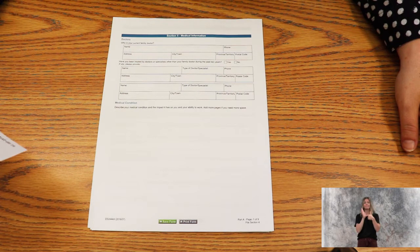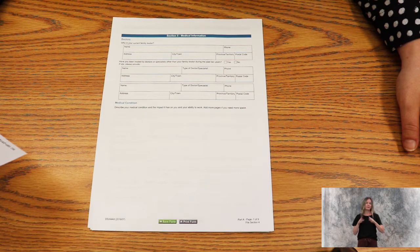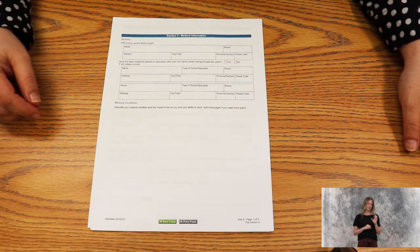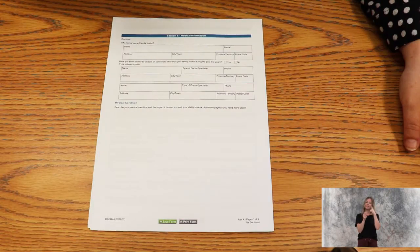Examples of functional limitations include physical abilities, behavior and emotional abilities, communication and thinking abilities, and daily activity abilities. VAD provides a cheat sheet for the doctors as to what AISH is looking for.